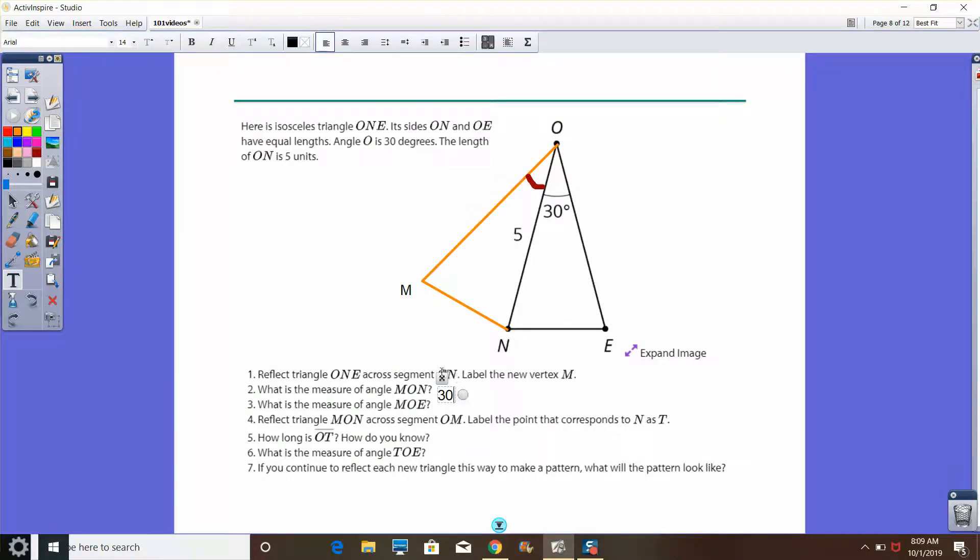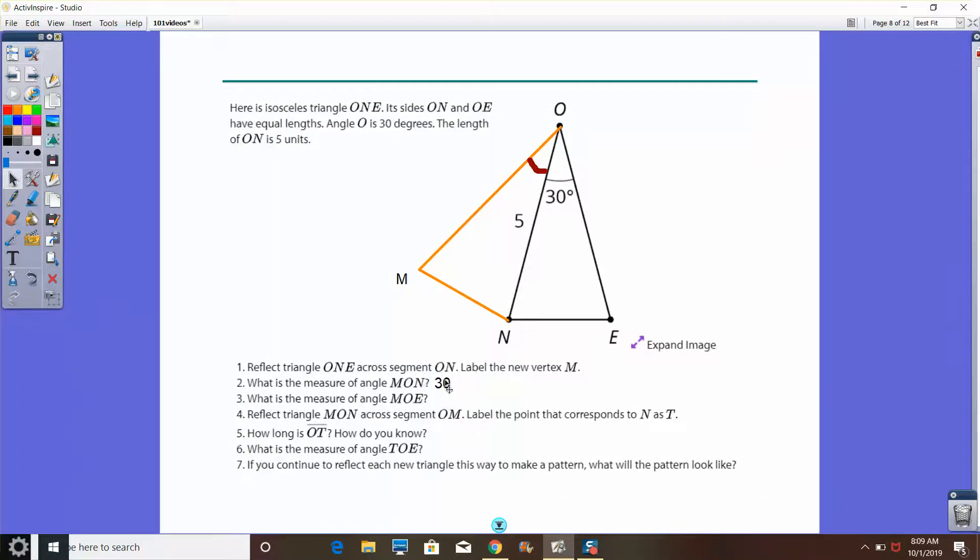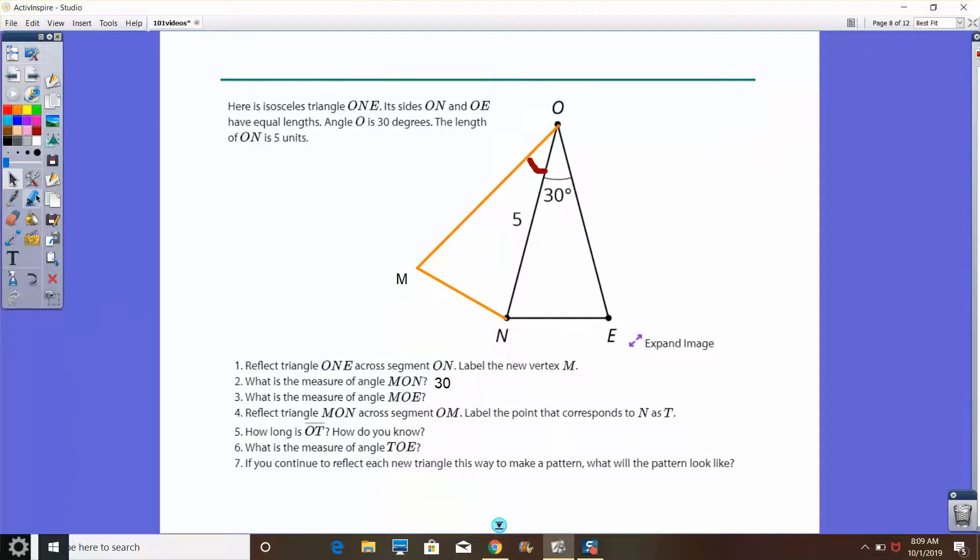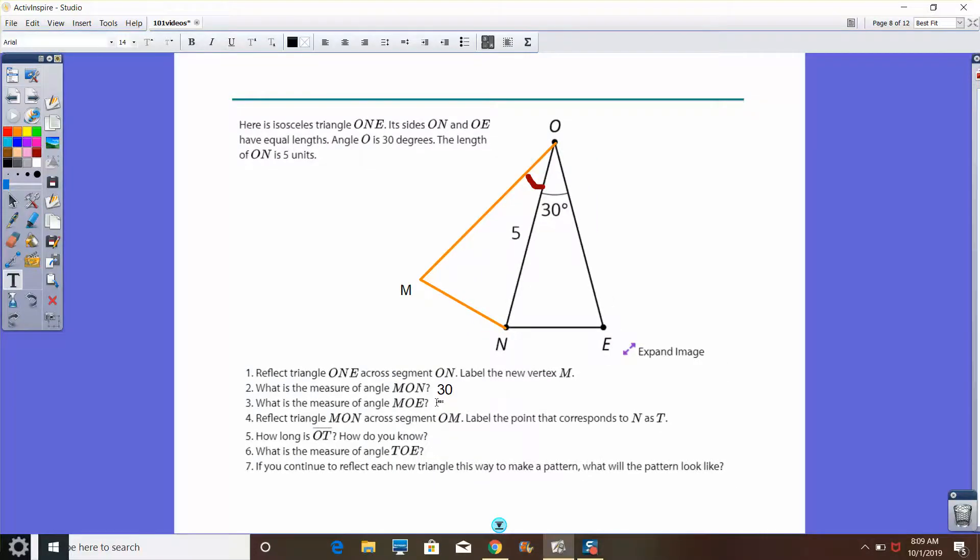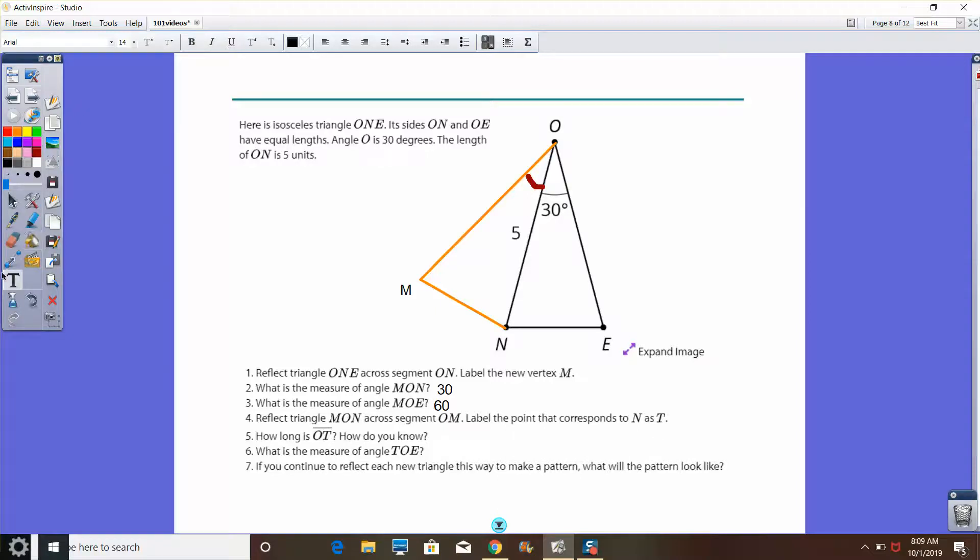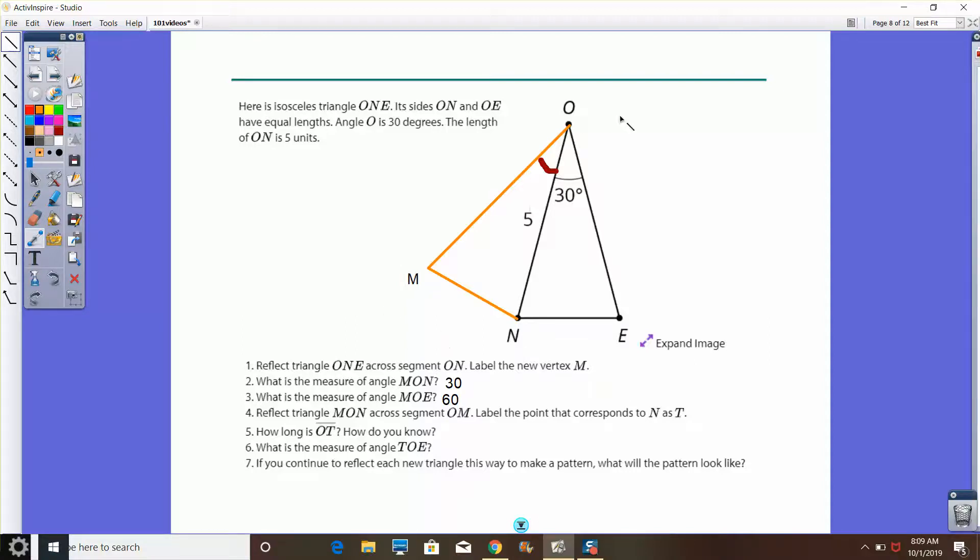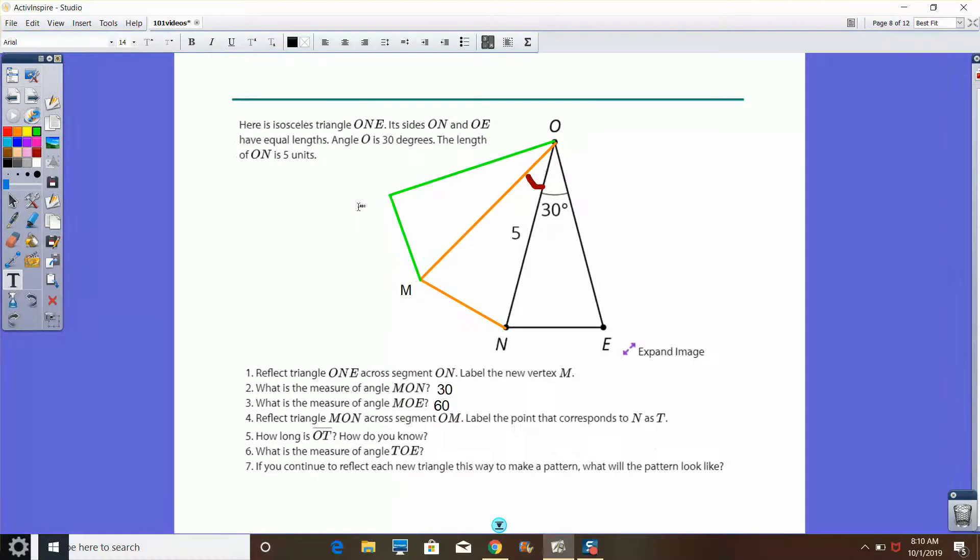Because if I reflect a triangle, I end up with the exact same measures of all sides and all angles. So MON is going to be 30 degrees. Now, you may say, what about MOE? Well, if I look at MOE, now we're taking this whole thing together. If this is 30 here, this is 30 here, that means this entire thing is going to be 60. So MOE is equal to 60 degrees. Now, our next job is to reflect triangle MON across segment OM. Label the point that corresponds to N as T. So once again, here we go. Now we're going to use OM as my mirror. And I'm going to reflect triangle MON. OM as my mirror allows me to now have this as my triangle. That's point T.